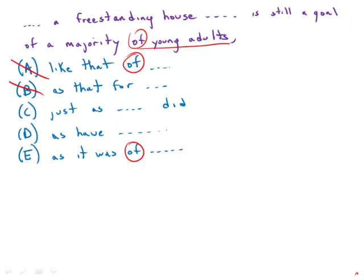C and D do have a noun and verb, but in C, it's the verb, earlier generations did. D, have, early generations have. And that's not quite the same construction of the first sentence.